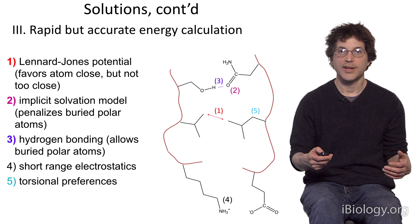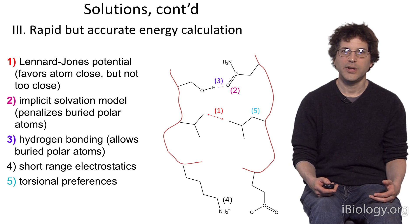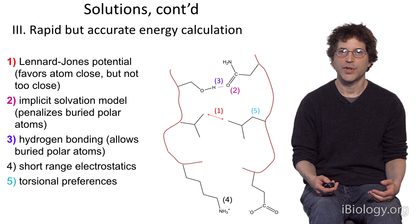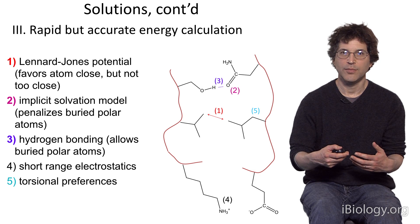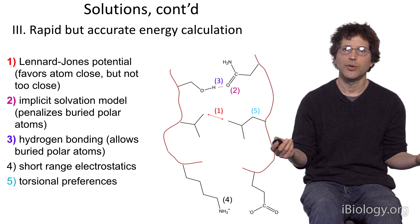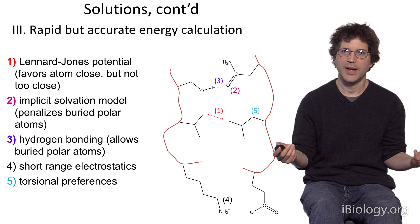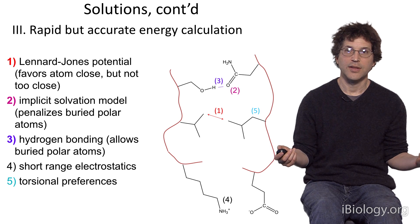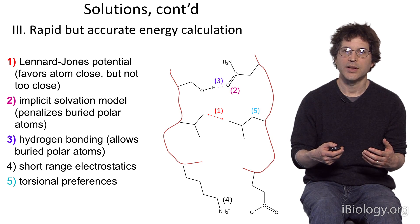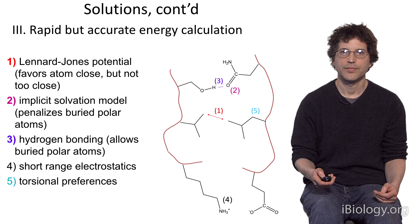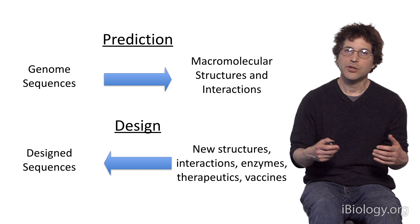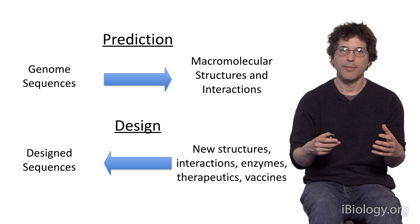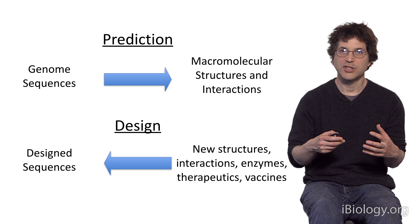The third problem — the necessity to calculate energies accurately — we solve in the following way. We use a model in which we try to capture the detailed interactions between atoms as accurately as we can. There are terms in the energy function that favor close atomic packing but prevent atoms from overlapping, terms that penalize the burial of polar atoms away from solvent, terms that favor the formation of hydrogen bonding interactions between polar atoms, and terms that model electrostatic interactions and the bending preferences of the polypeptide chain.